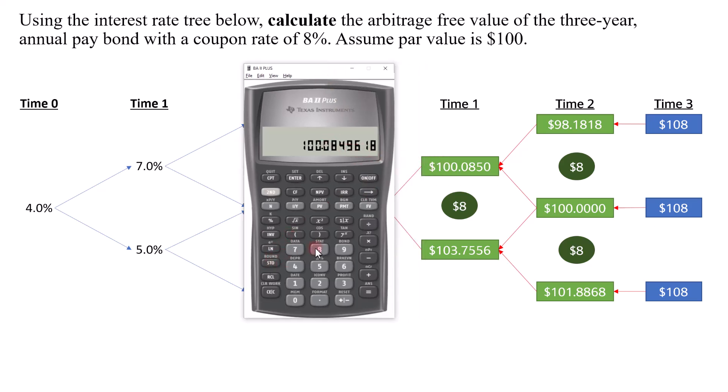Now I'll continue to the lower node. So I'll press recall 6 plus recall 3. That's equals to this amount, divide by 2 plus the coupon $8. Then I will divide by 1.05. And that's 103.7556. I'll store that as number 5 just in case.